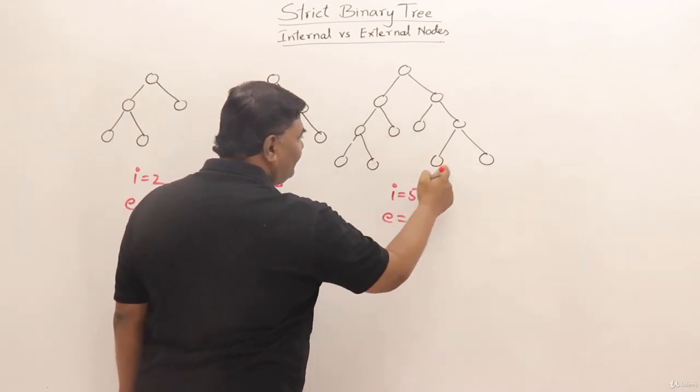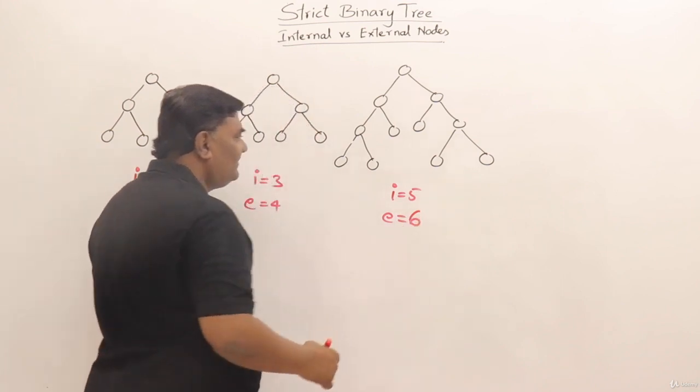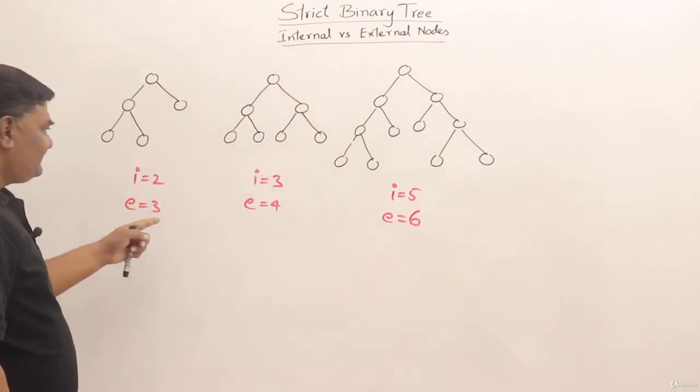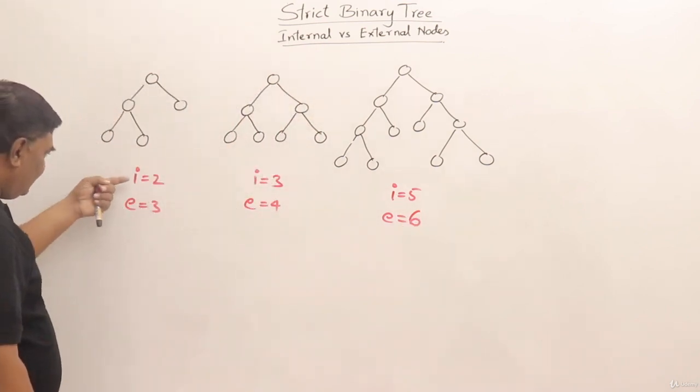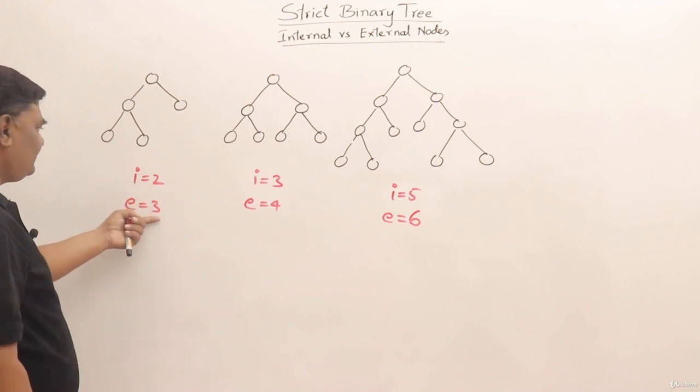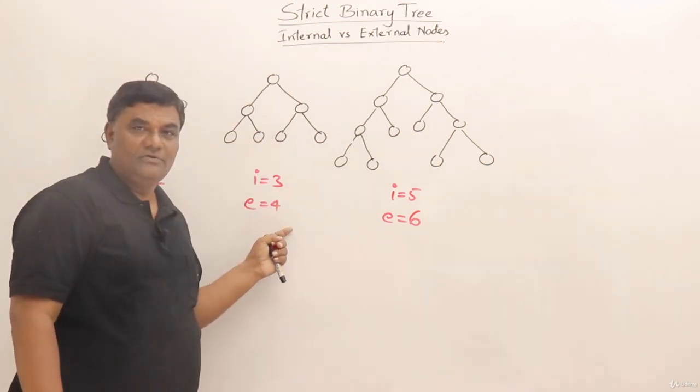Leaf nodes 1, 2, 3, 4, 5, 6. So from these examples we can see that internal nodes are 2 and external nodes are 3. This is 3, so this is 4.